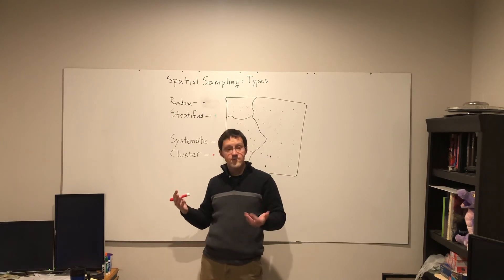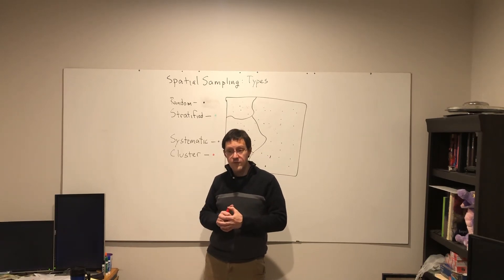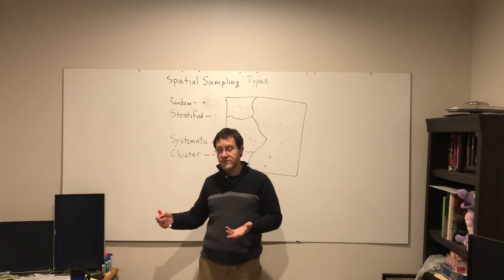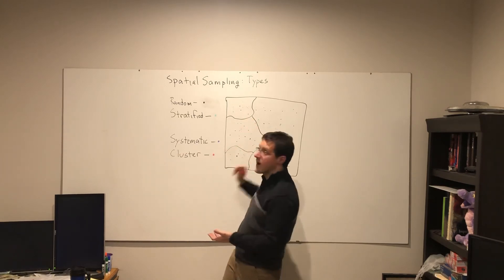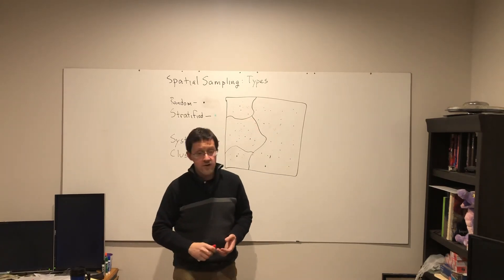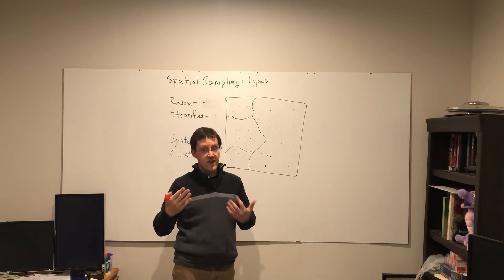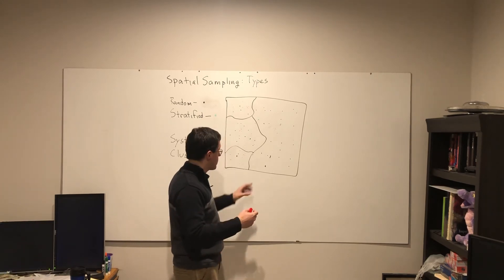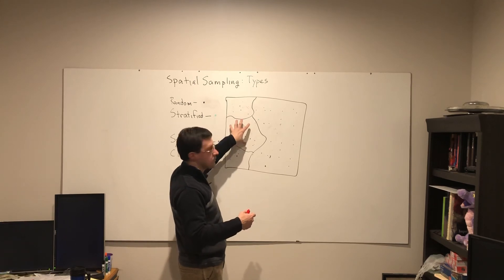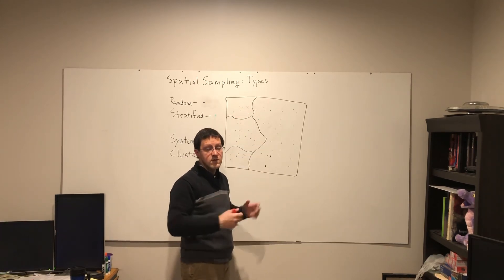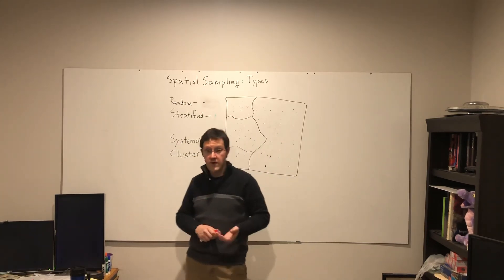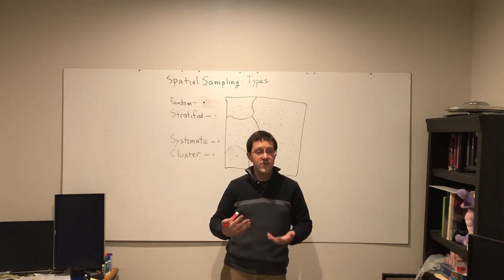So here again, four different types of spatial sampling. I'm not drawing it here, but hybrid works as well. I could stratify by these four areas and have a denser network, say a systematic sample, but where there's a much denser network of points in one area versus the other three. Or within one, I'll use a cluster sample, but random in the others. Those are all different possibilities.